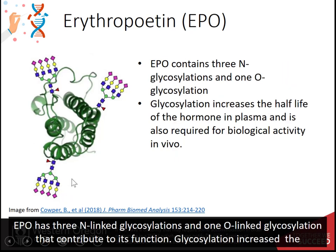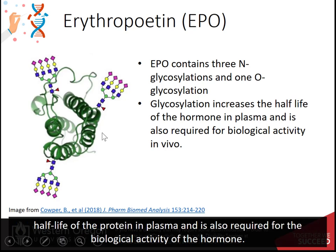EPO has three N-linked glycosylations and one O-linked glycosylation. They contribute to its function. Glycosylation increases the half-life of the protein in plasma and is also required for the biological activity of the hormone.